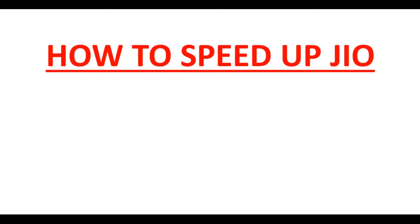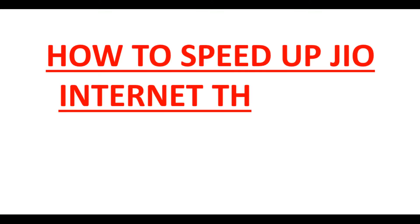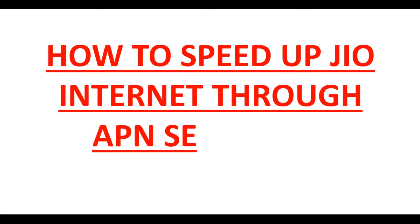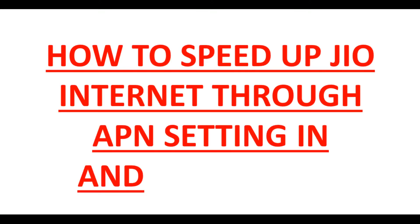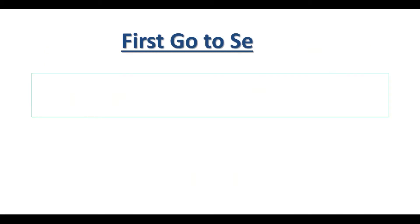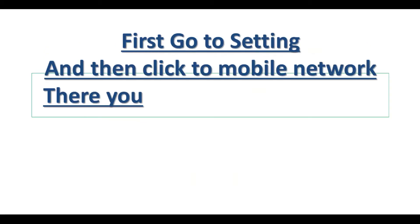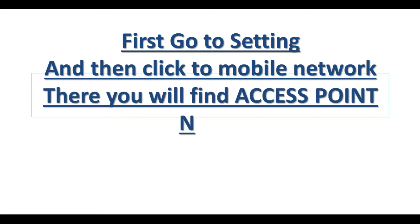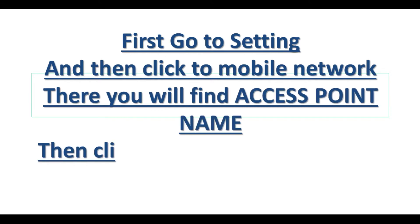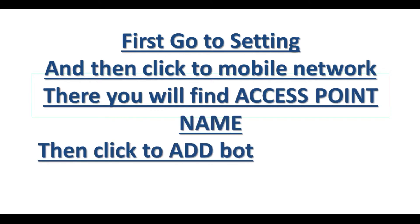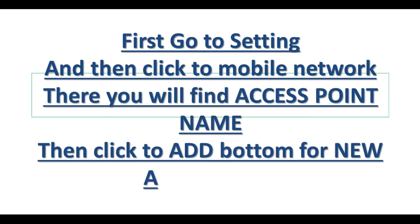How to speed up Geo internet through APN setting in Android mobile. First, go to Settings, then click on Mobile Network. There you will find Access Point Name. Then click the Add button for a new APN setting.